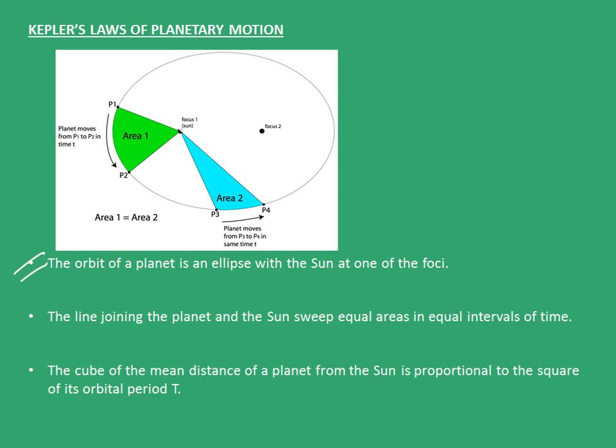This picture here shows that the satellite goes from point P1 to P2 in a time, say, T. The same satellite then goes from point P3 to P4 in the same time, T. So, according to this law, area 1 is equal to area 2. The third law says that the cube of mean distance of planet from the sun is proportional to the square of its orbital period T. That is, A cube is proportional to T square where A is the mean distance of planet from the sun.